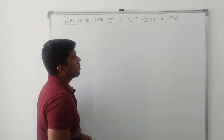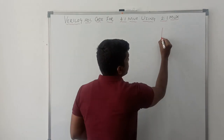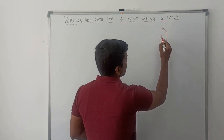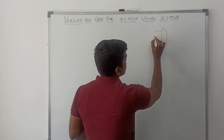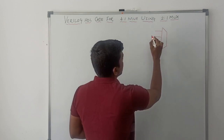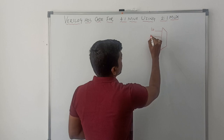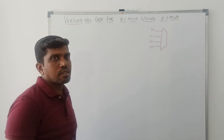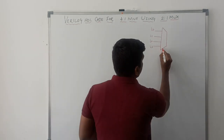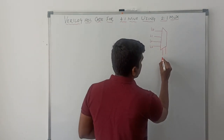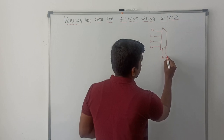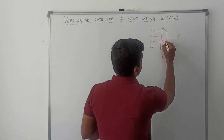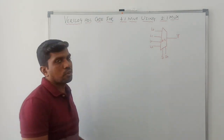First, I draw the simple structure of a 4-to-1 mux. It has 4 inputs: I0, I1, I2, I3. These 4 signals are considered as input signals, and it has 2 selection lines: S1 and S0. Y is the output. So this is the simple structure of a 4-to-1 mux.